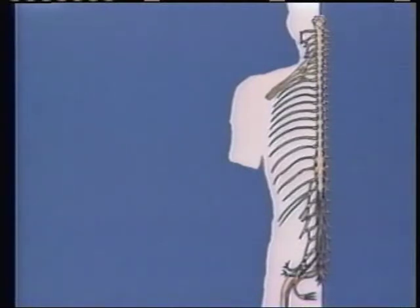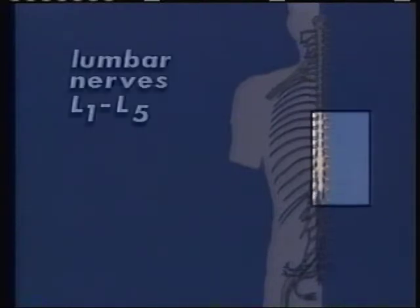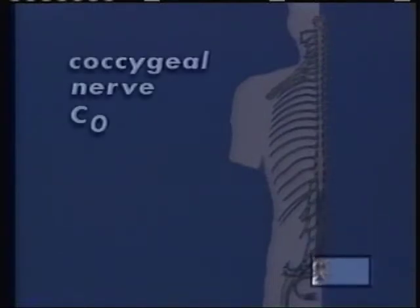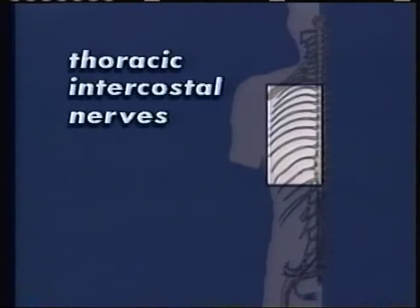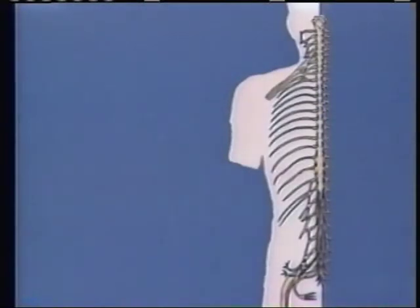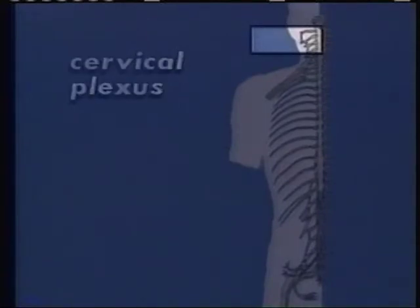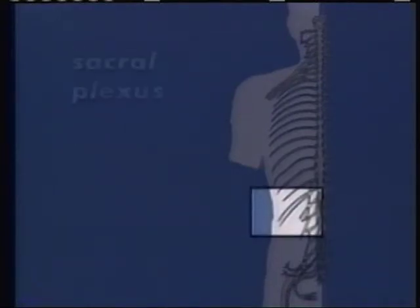There are 31 pairs of spinal nerves, which include 8 pairs of cervical nerves, 12 thoracic pairs, 5 lumbar pairs, 5 sacral pairs, and 1 pair of coccygeal nerves. The ventral rami of spinal nerves T2 through T12 form thoracic intercostal nerves. All other ventral rami branch and rearrange their fibers to form complicated networks or plexuses, which include the cervical, brachial, lumbar, and sacral plexuses.